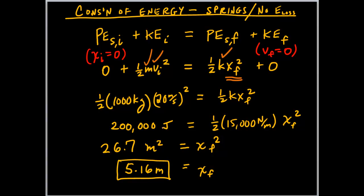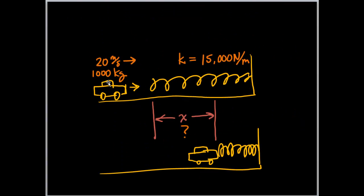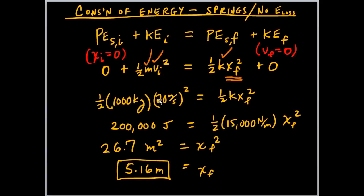Simple mathematics from here. So, the car has 200,000 joules of kinetic energy going in. Don't forget to square the speed. That's going to equal one half times k. Now, k is given, 15,000 newtons per meter times x final squared. 200,000 divided by 7500 is 26.7. So, we have to take the square root and we get 5.16 meters.